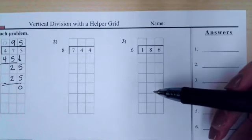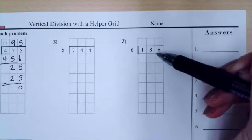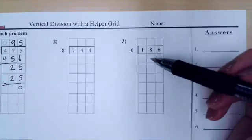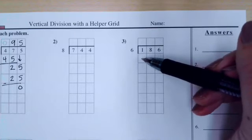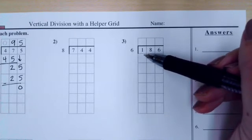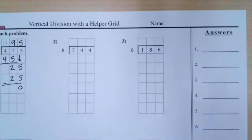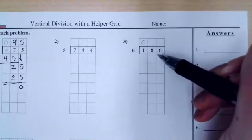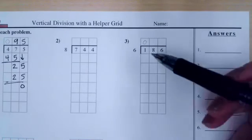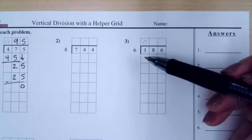Now we're dividing 186 by six. If we just have 100, are we able to make a group of six with just 100? We're not. So again, you can put a zero up there or imagine it, and then we go next door and say: let's look at 18 tens instead. If I have 18, can I make a group of six? I can.